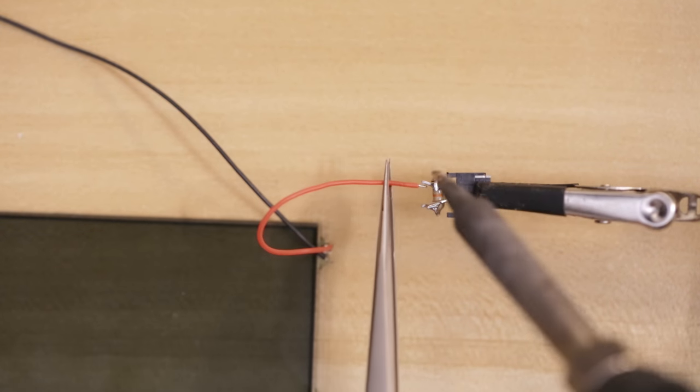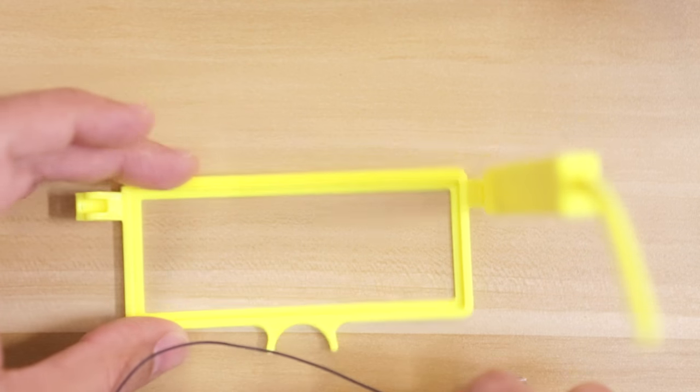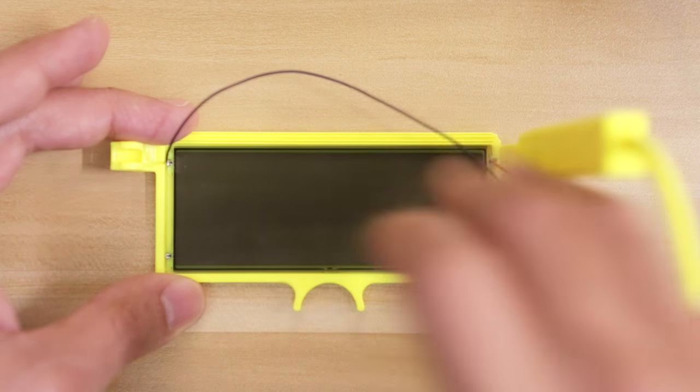Next, connect these wires to the female JST connector, the one with the resistor. Now we can insert the glass into the frame by pressing it until it clicks into place.